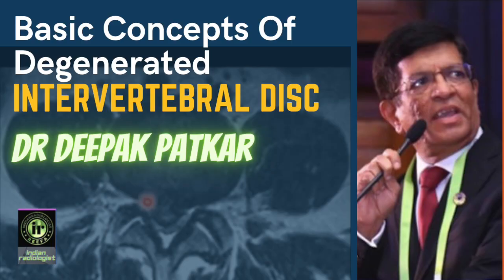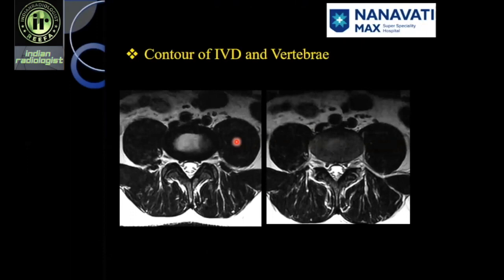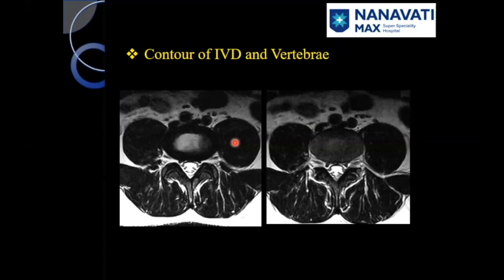A little bit about posterior contours of intervertebral discs and vertebrae at L4-5 and L5-S1 levels. The discs are normally convex posteriorly, a little bit, but they do not go too much beyond the upper or lower vertebral bodies. With a little bit of degeneration, the annular fibres start getting degenerated, the inner fibres start getting torn and the disc then starts bulging. At L4-5 and L5-S1 levels, you have to be careful to look in both sagittal and axial planes to call it a bulge.